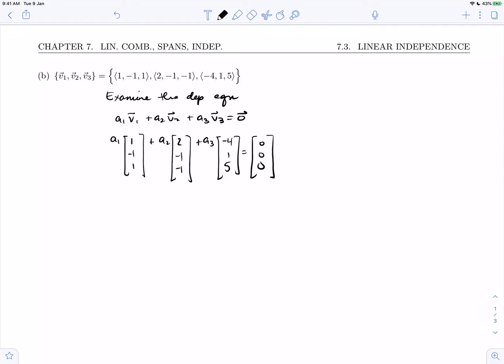So our system is going to be a homogeneous linear system. a1 plus 2a2 minus 4a3 equals 0, minus a1 minus a2 plus a3 equals 0, and a1 minus a2 plus 5a3 equals 0.